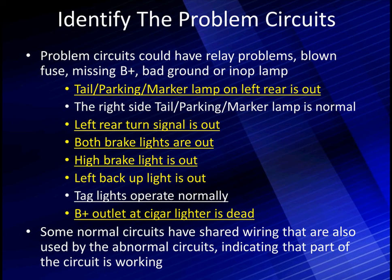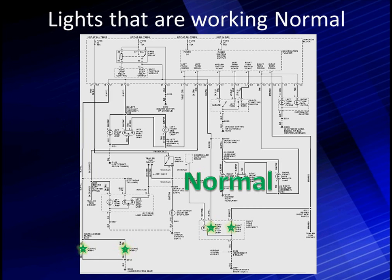There are a lot of places to go. Some people say with this many things wrong it must be a fuse. Let's let the data point us to the problem area. Some of the normal circuits have shared wiring that is also used by the abnormal circuits. If we see the right tail, parking, and marker light working, then it has to share the same fuse as the left one. That's what we're talking about. Let's look at this on paper and start figuring it out.